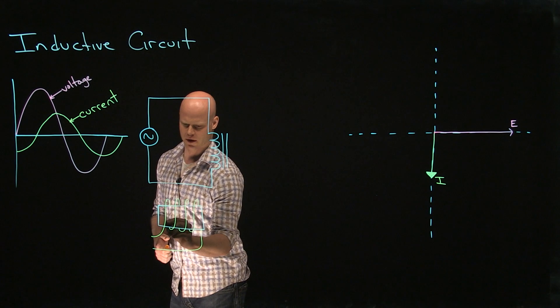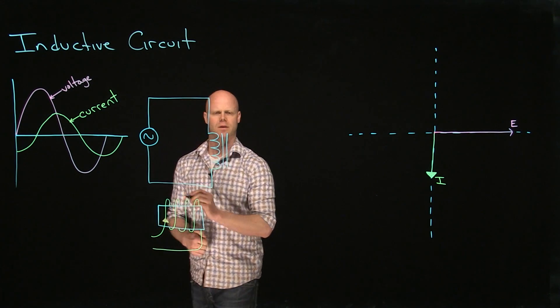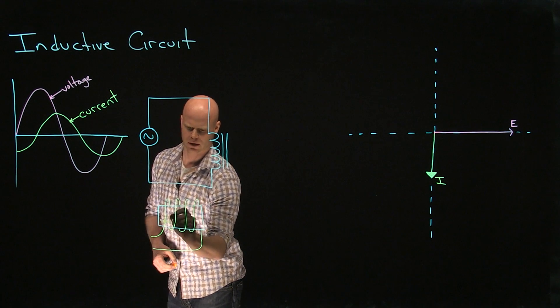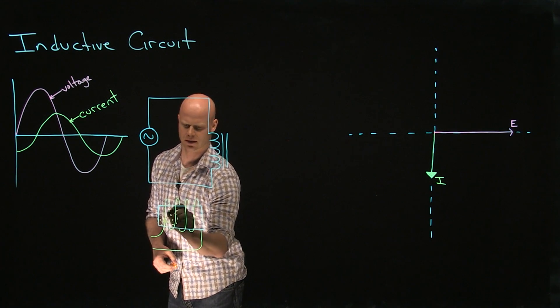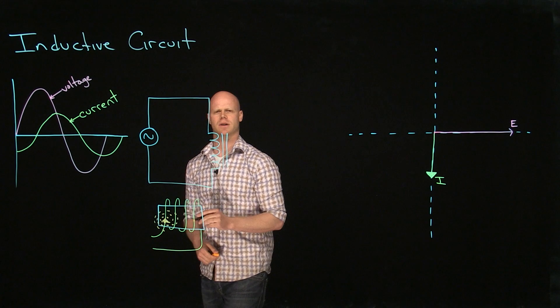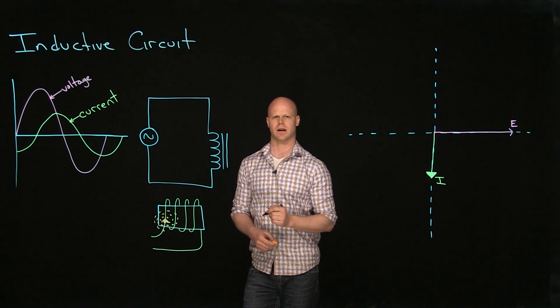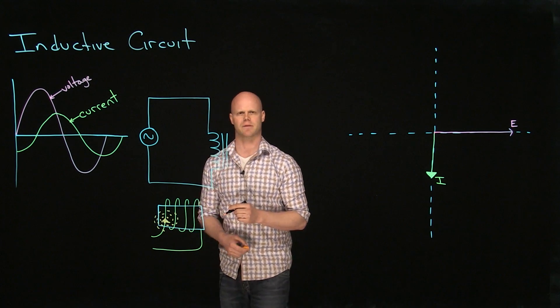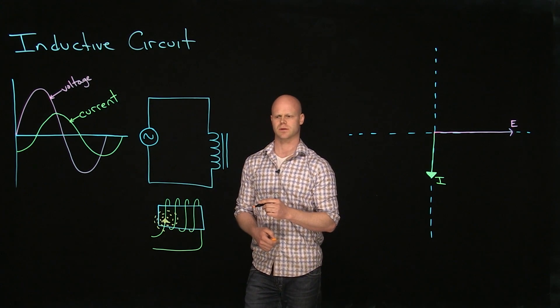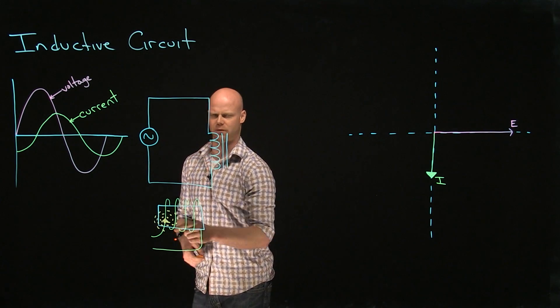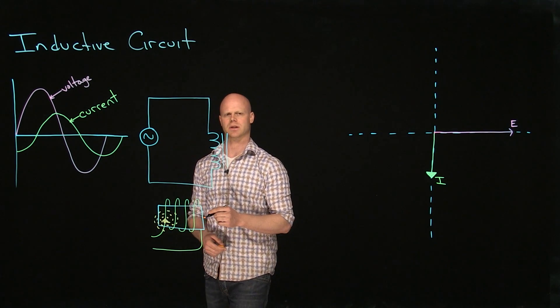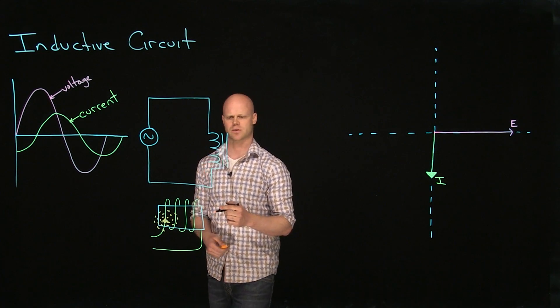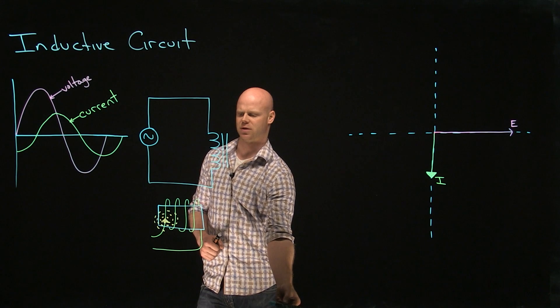So when I have current that enters that coil, I have an electromagnetic field that is around that conductor. Whenever I have relative motion between a conductor and a magnetic field, I will have an induced voltage. This counter-EMF, this induced voltage, is very important to understand because that counter-EMF will cause a current to flow that opposes the change that produced it.